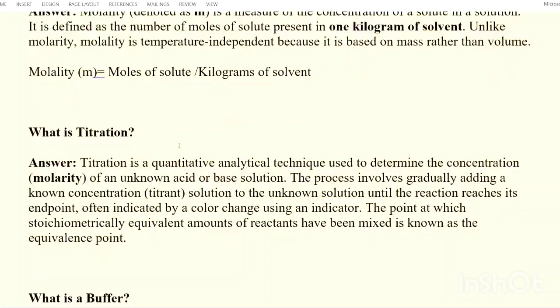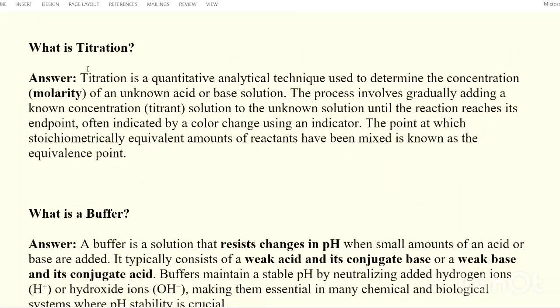What is titration? In laboratory experiments you may have performed titration. Titration is a quantitative analytical technique to determine the concentration of unknown acid or base solution. The process involves gradually adding a known concentration solution, the titrant, to the unknown solution until it reaches its endpoint through a color change using an indicator. The point at which stoichiometrically equal amounts of reactants have mixed is known as the equivalence point.